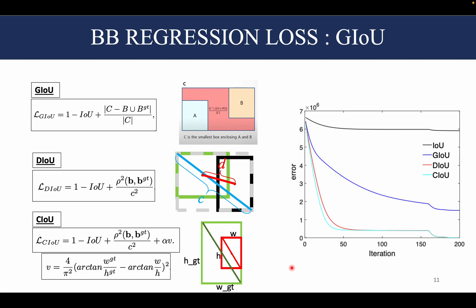Finally, if we have a look at this graph here, we see that as the iterations increase, the distance IoU and complete IoU give a much faster optimization, and the loss reduces much faster as compared to GIoU or IoU.